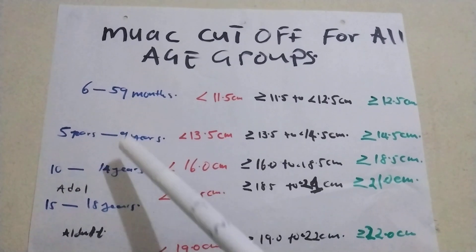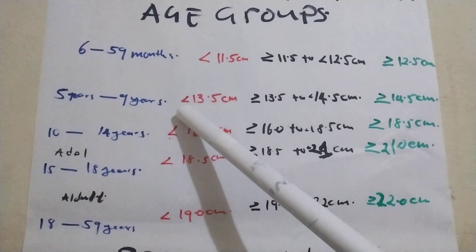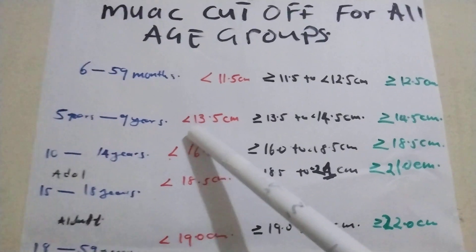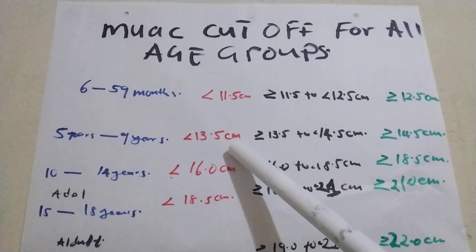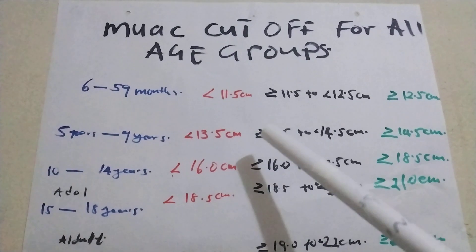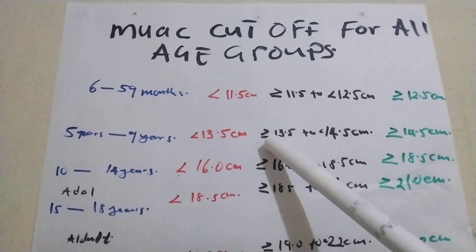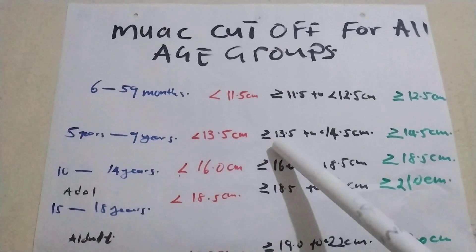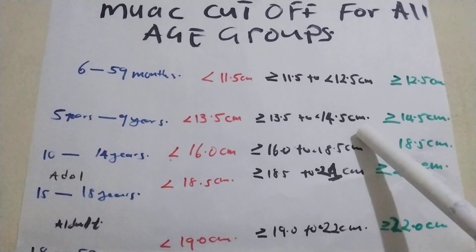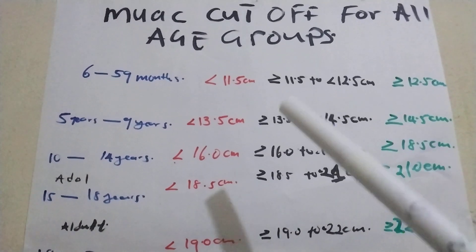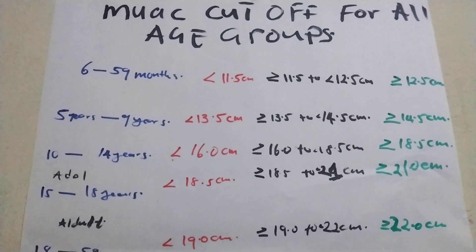From 5 years to 9 years: SAM is less than 13.5 centimeters. Moderate acute malnutrition is 13.5 centimeters to 14.5 centimeters. Normal for 5 to 9 years is 14.5 centimeters and above.